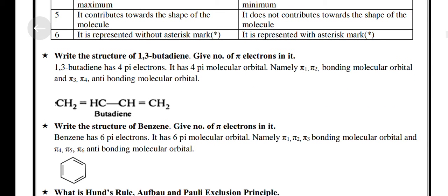Tenth question: Write the structure of 1,3-Butadiene. Give the number of π (pi) orbitals in it.